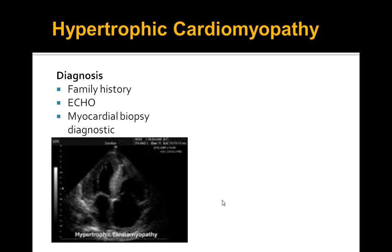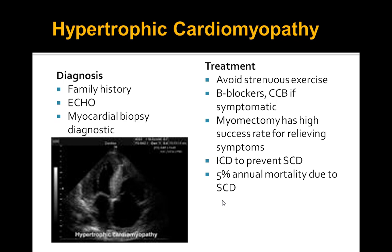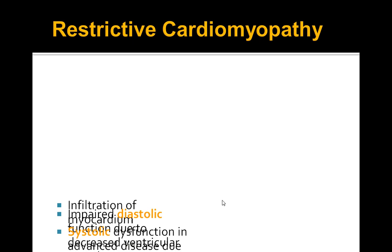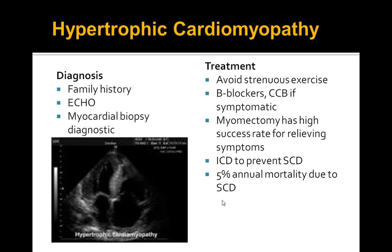An echocardiogram will show the hypertrophied septum. For treatment, avoid excessive strenuous exercise since the left ventricle has difficulty relaxing. Use beta blockers and calcium channel blockers if the patient is symptomatic. In some cases, myomectomy has high success rates. An ICD may help prevent abnormal arrhythmias. Beta blockers and calcium channel blockers help the left ventricle with relaxation.